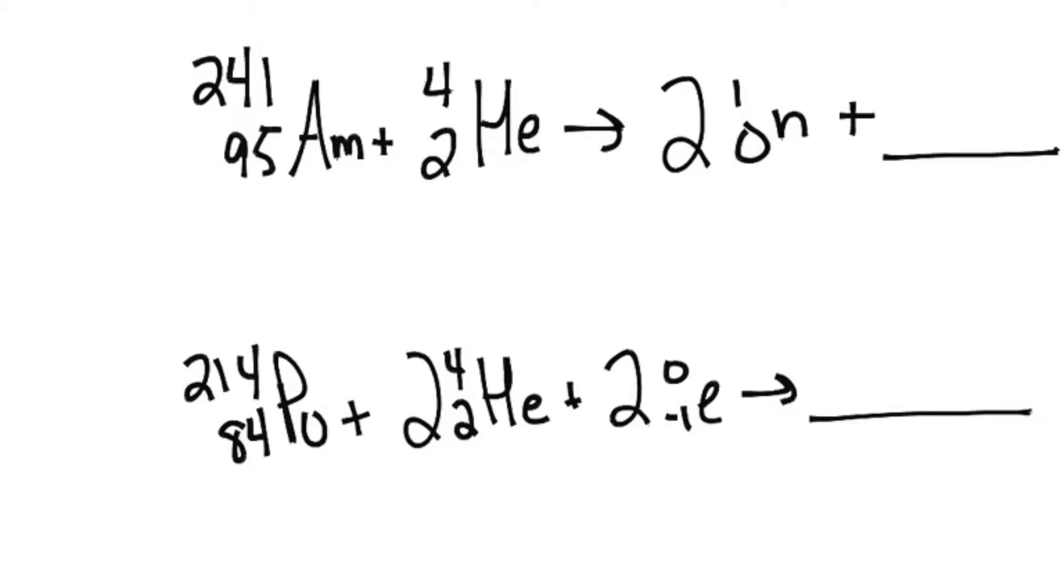See a nuclear equation where there's coefficients in front. So if we look at this first example, we'll see that there is a missing product, there's something I don't know, and I need to figure out what's the top number, what's the bottom number, and eventually what's the identity of this unknown particle.